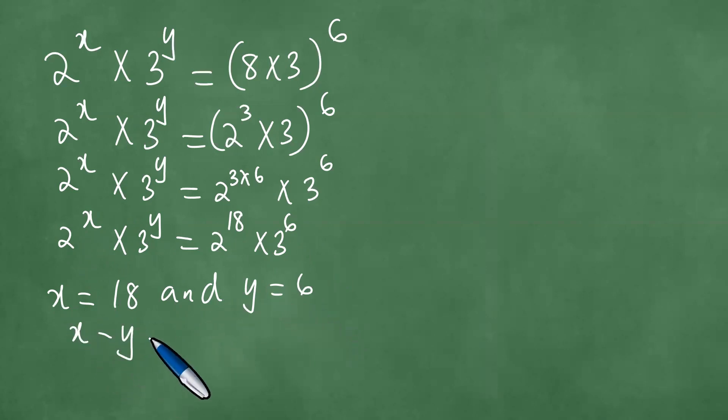The difference of x and y in the order x minus y equals 18 minus 6, giving us 12. Hence, we obtain that x minus y equals 12.